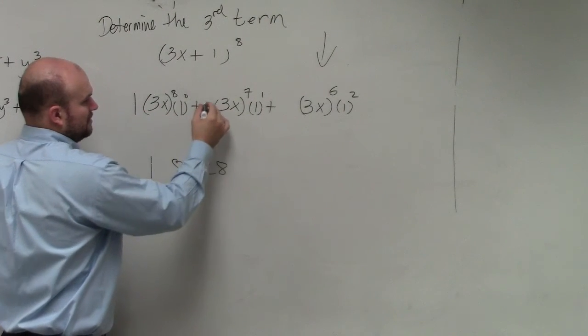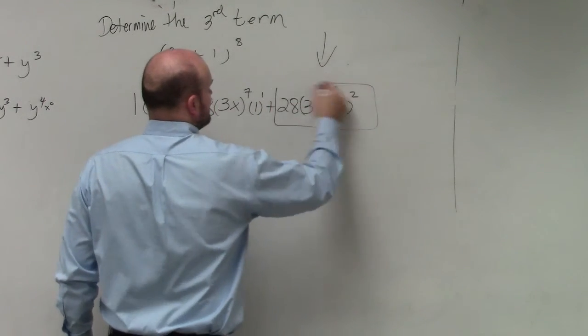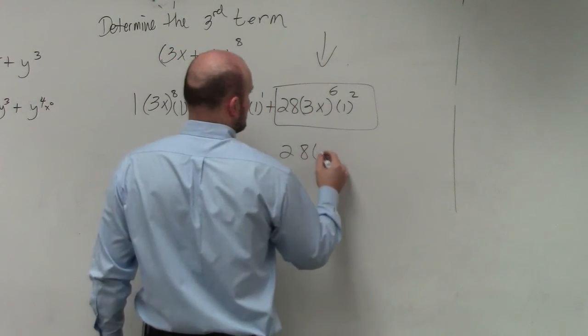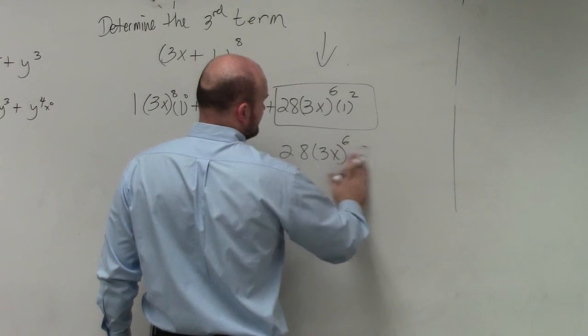So it would be 1, 8, 28. So basically, this third term is 28, 3x to the sixth times 1, which is just not even there.